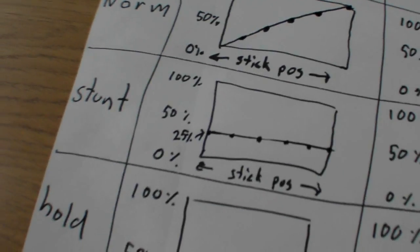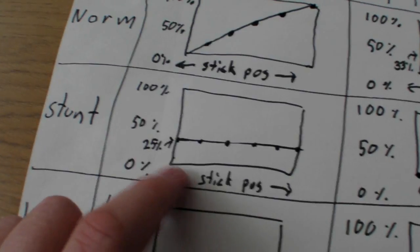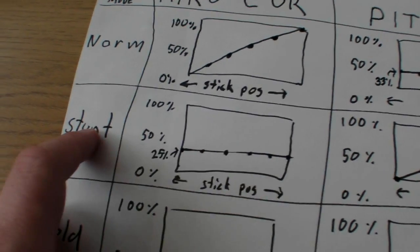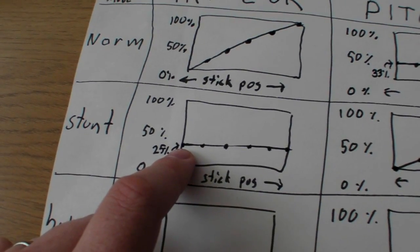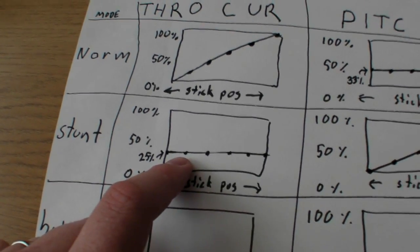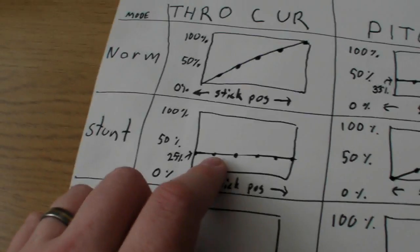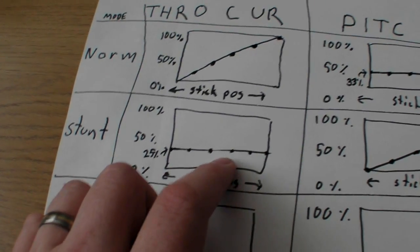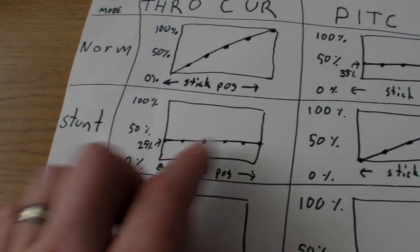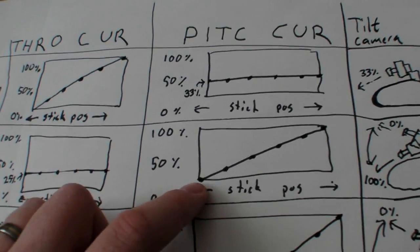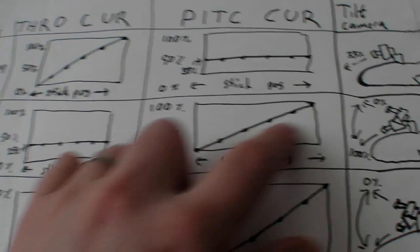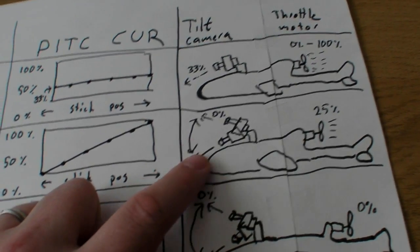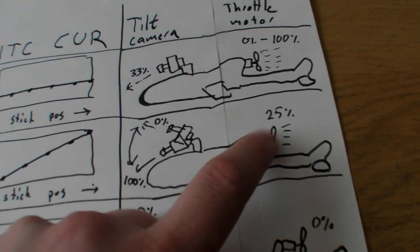Then I have stunt mode, where I have set the throttle curve to 25%. That means the motor is always running at 25% — which is great if you're flying around while looking down, or if you don't have enough altitude to glide but still want motor power while panning and tilting the camera. The pitch curve for the camera is the same as in hold mode — full camera up and down control with the stick. The motor is always at 25%.